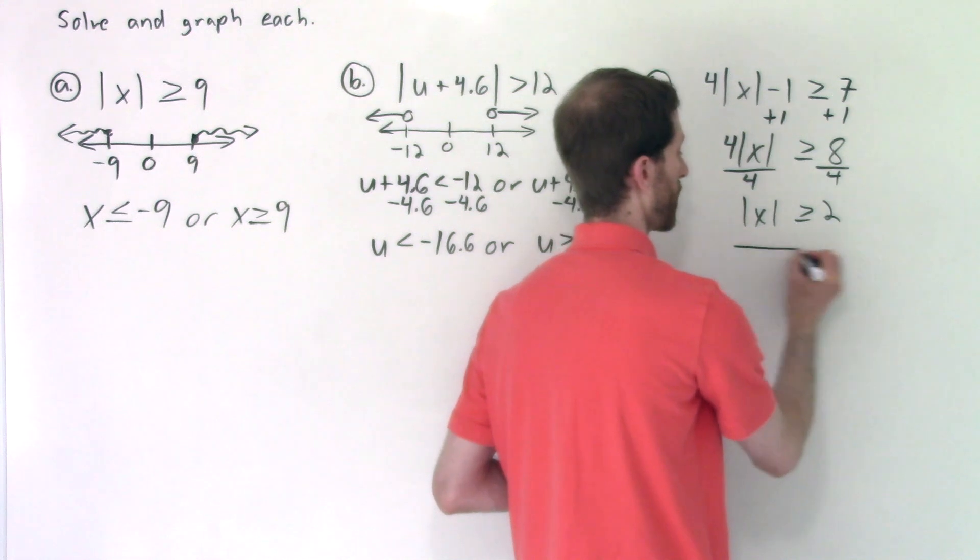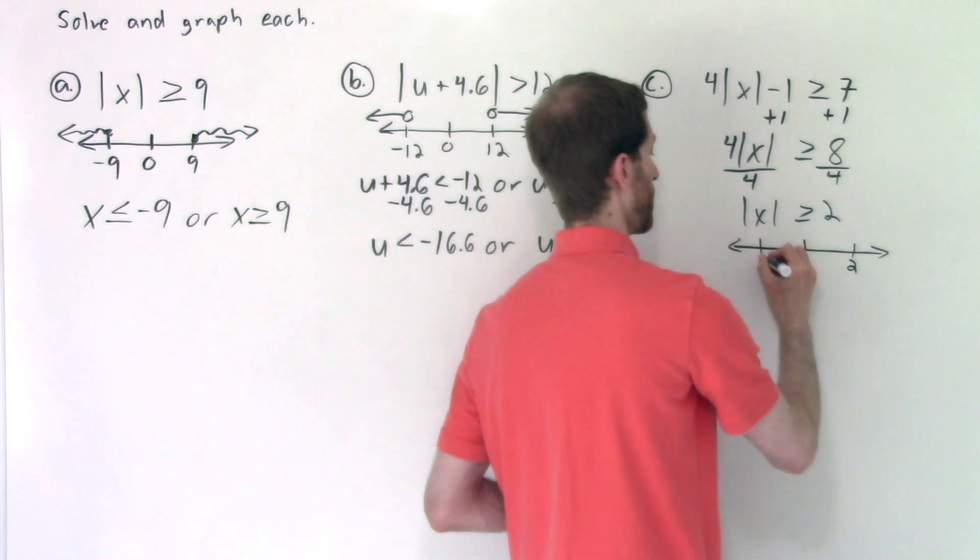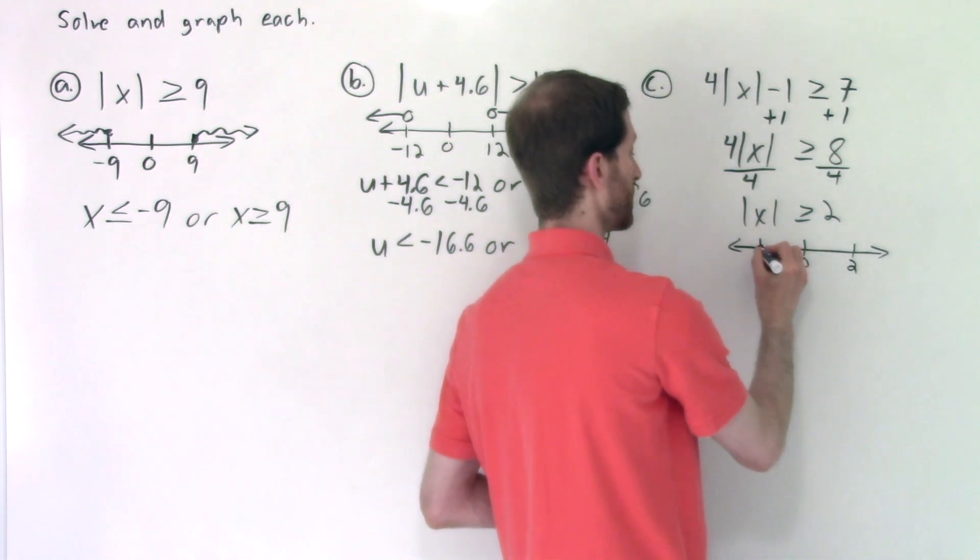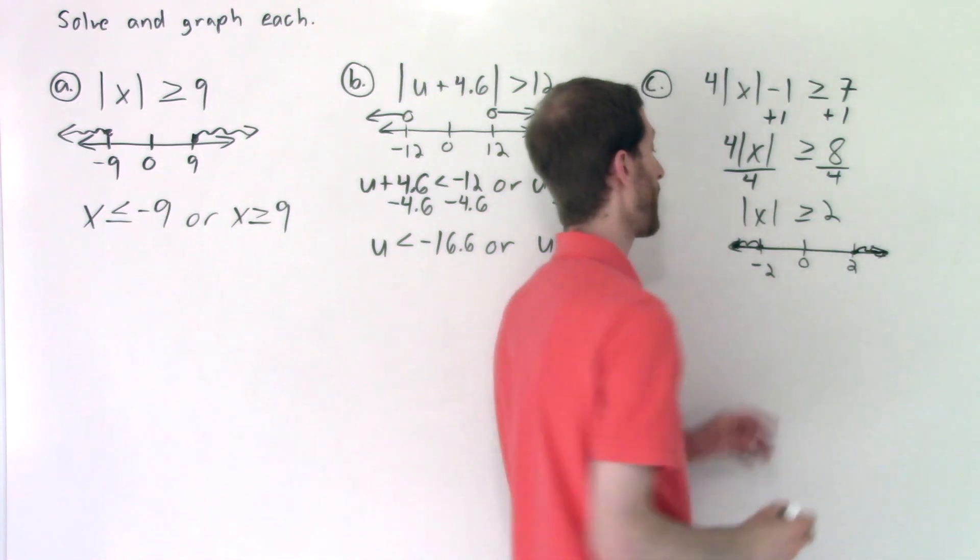Again, either visualize it or draw the graph to be certain. So here's zero, here's two, and here's negative two. So X is to the left or to the right.